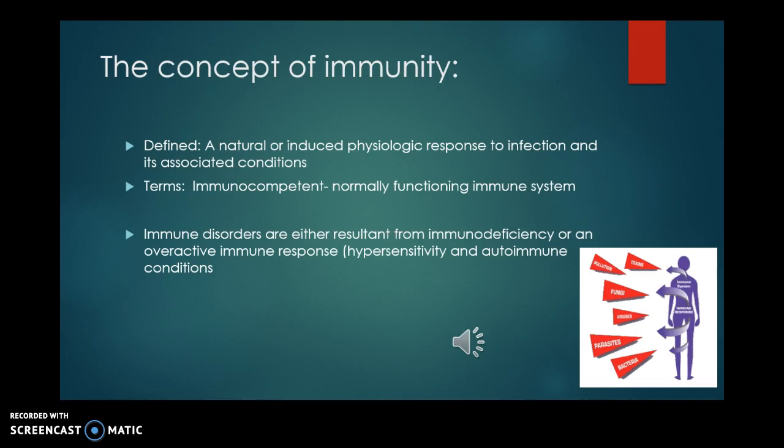The term immunocompetent describes somebody who has a normally functioning immune system, as opposed to somebody who is immunodeficient. Generally, when you look at immune disorders, you're looking at either a hyperimmune system — like allergies or autoimmunity — or a hyporesponsive or immunodeficient immune response. Those are the two ends of the spectrum when looking at problems with immunity.